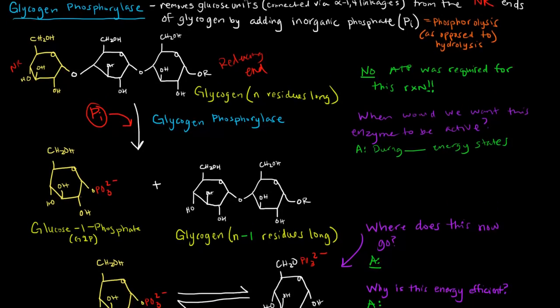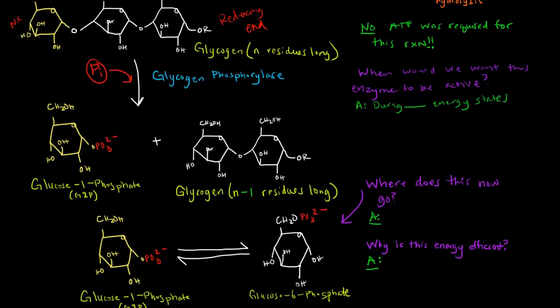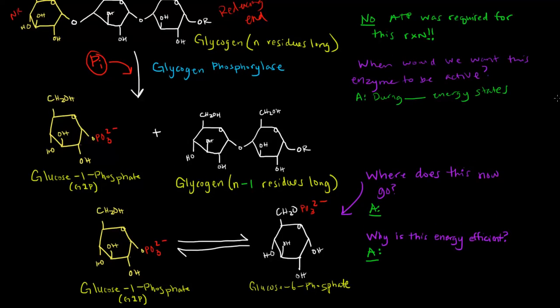Now what happens to this glucose 1-phosphate? We've seen glucose 1-phosphate before. What ends up happening is that this glucose 1-phosphate will be turned into glucose 6-phosphate via the same enzyme that catalyzed the reverse reaction in glycogen synthesis. This would be catalyzed by phosphoglucomutase. Once we create this glucose 6-phosphate, all this enzyme does is move this phosphate from the 1 carbon to the 6 carbon.